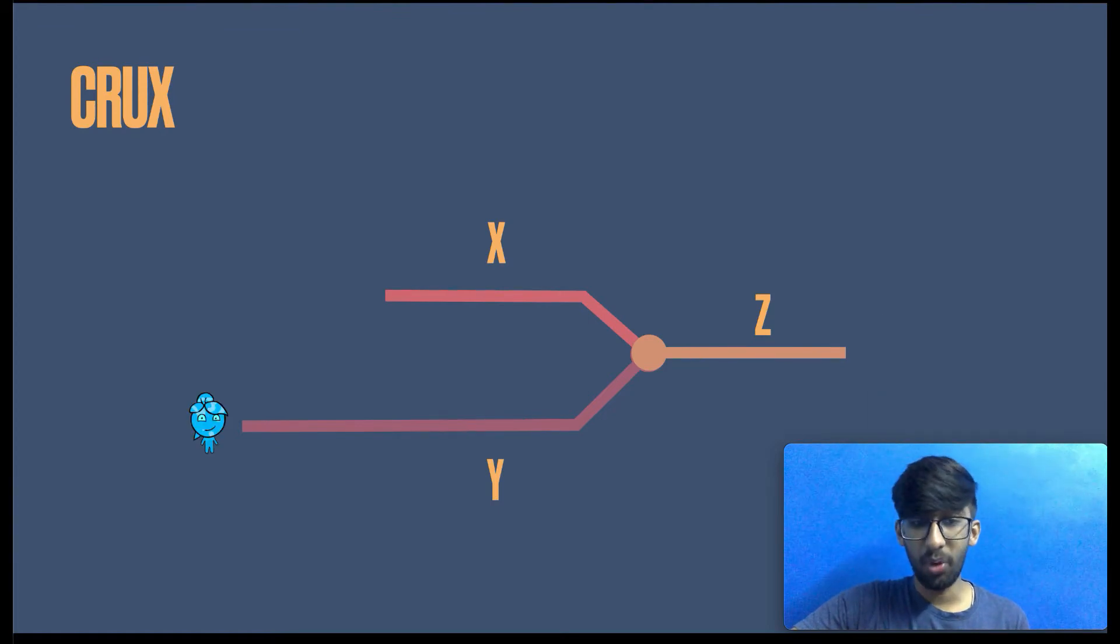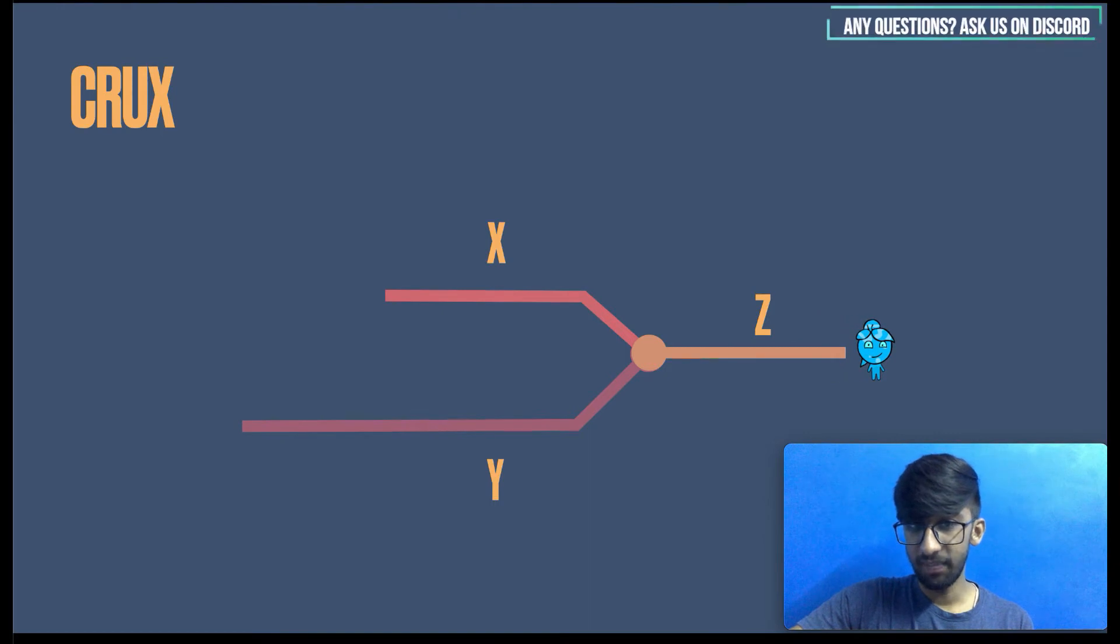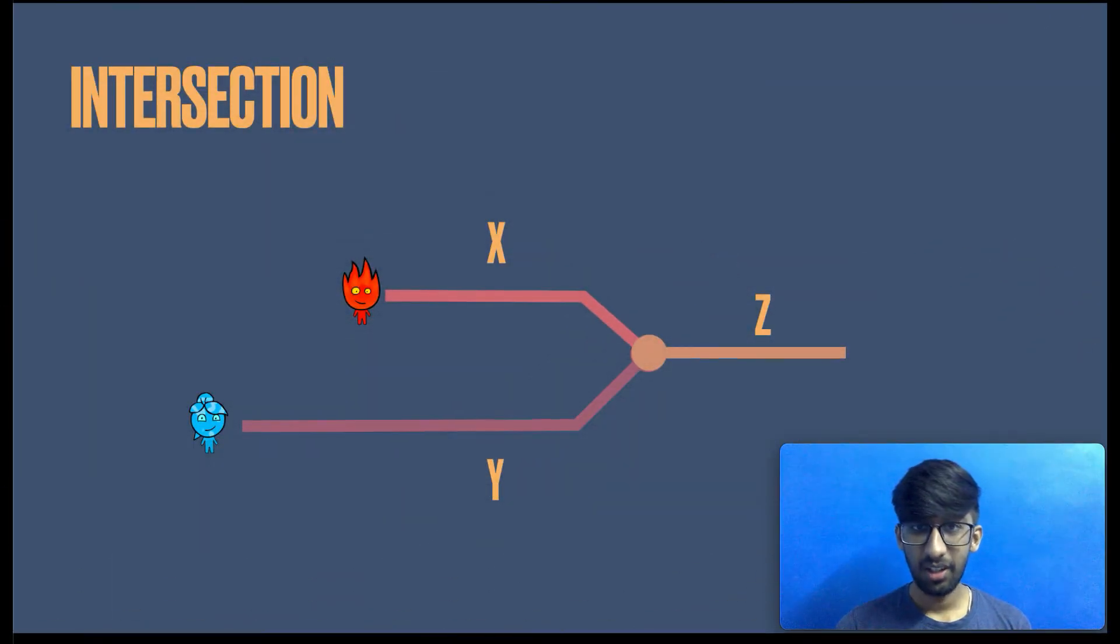Now, assume there is another pointer represented by watergirl, except the watergirl starts at Y start. Similarly, when she reaches the end of Z, it will wrap over and start at the X. This part is clear? Okay, here comes a bold statement.